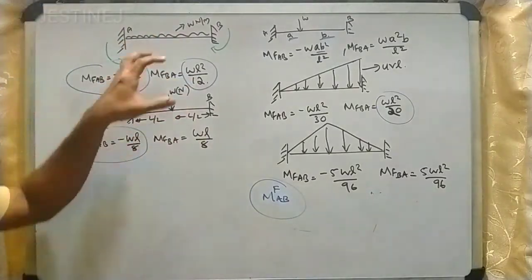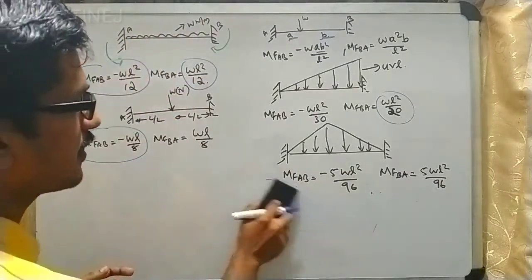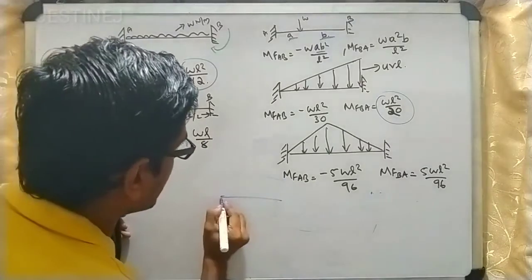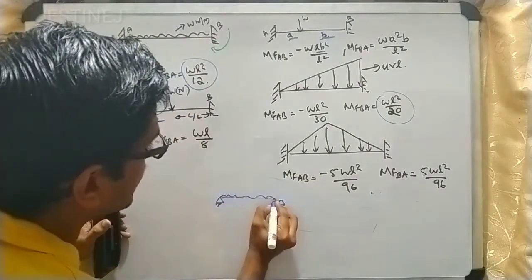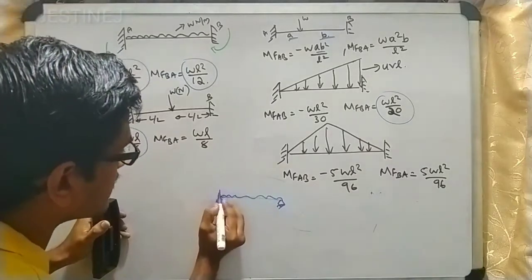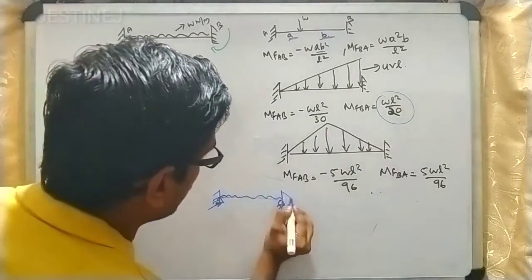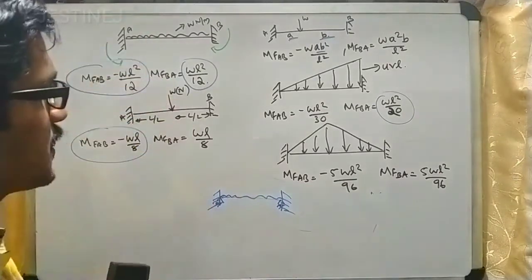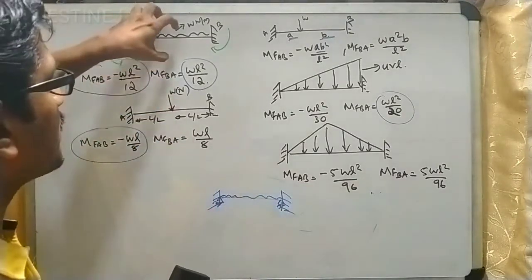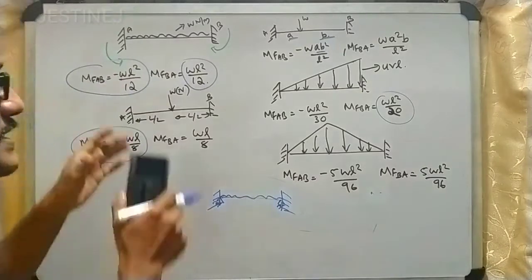The first case we will discuss is when a UDL is acting. This happens in a continuous beam. In the first step we note down that we are converting this into fixed end, both ends to be fixed. If a UDL is acting over a fixed beam.